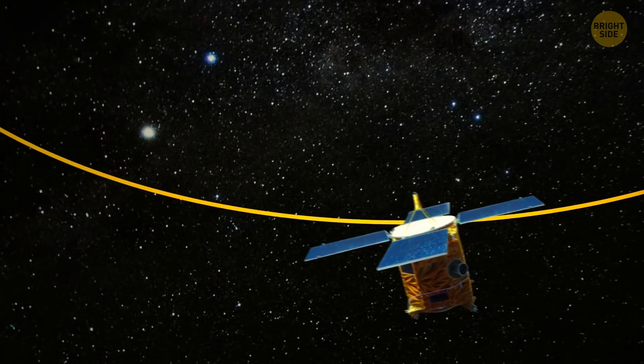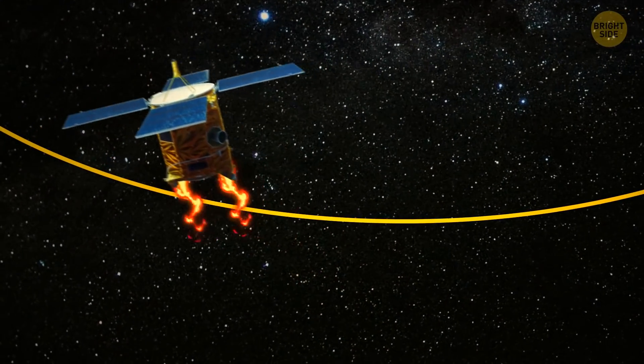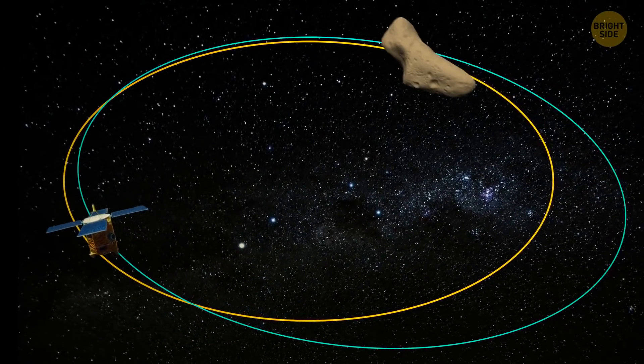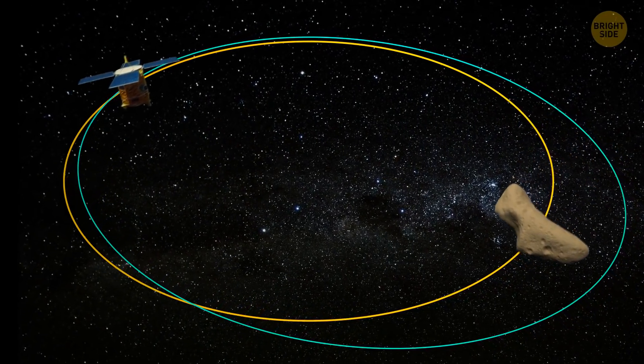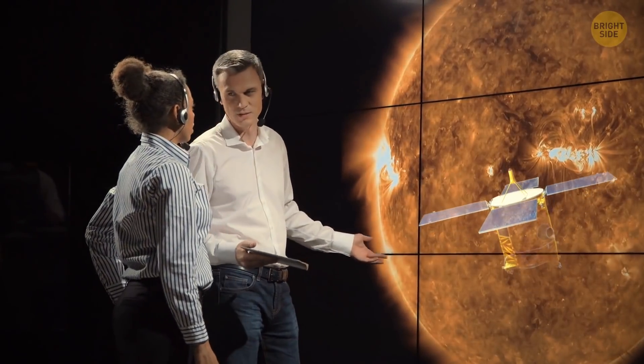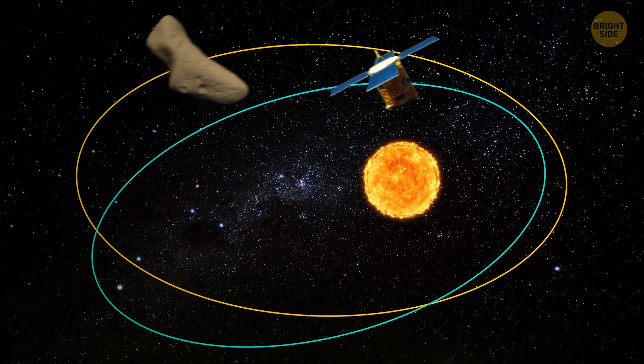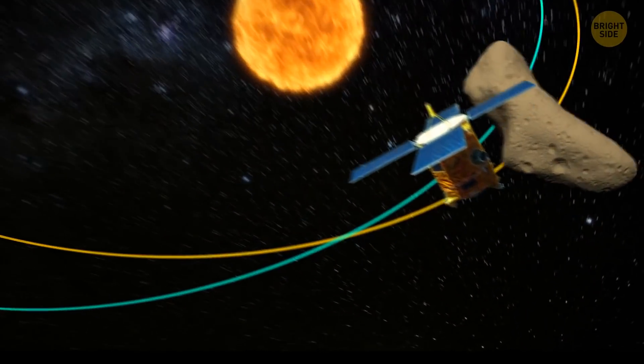NEAR almost didn't make it there, because an engine misfire from 1998 brought it into the wrong trajectory, and it missed the target. Yet engineers decided to let NEAR do the circle around the sun for one more year, and it eventually made it.